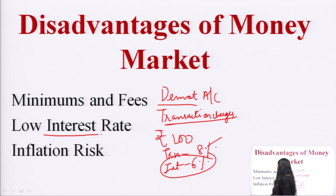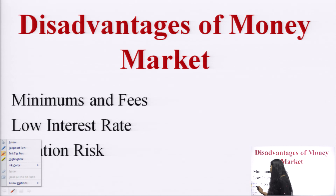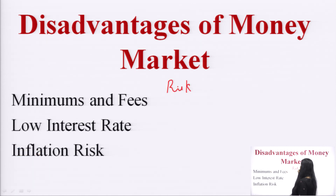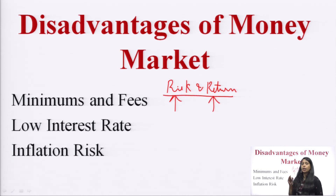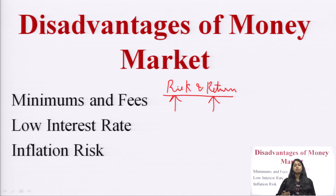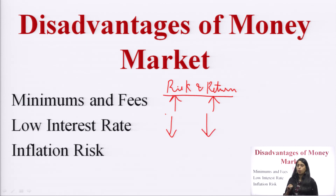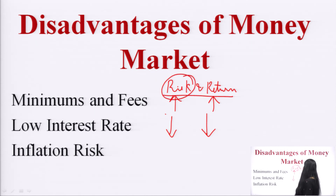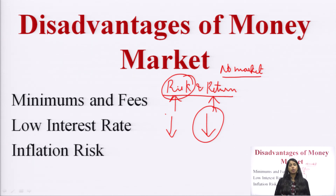The second disadvantage is low interest rate. The risk-return trade-off means higher risk yields higher return. The money market has low risk, which means low returns and more liquidity. If you want higher returns, you must go to the capital market and bear higher risk. There is no market that offers both low risk and high return simultaneously — that is the limitation of the money market.